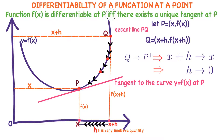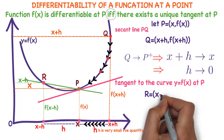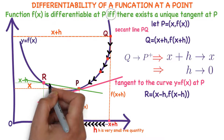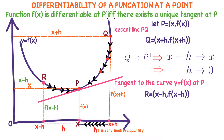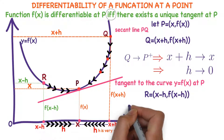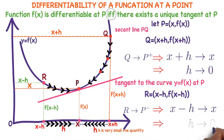Now observe secant line PR. R is (x−h, f(x−h)). As R approaches P from the left, observe the limiting position of secant line PR — it becomes tangent to the curve at point P. R approaching P from the left means h is approaching zero. As Q approaches P from the right and R approaches P from the left, there exists a unique tangent to the curve at point P.